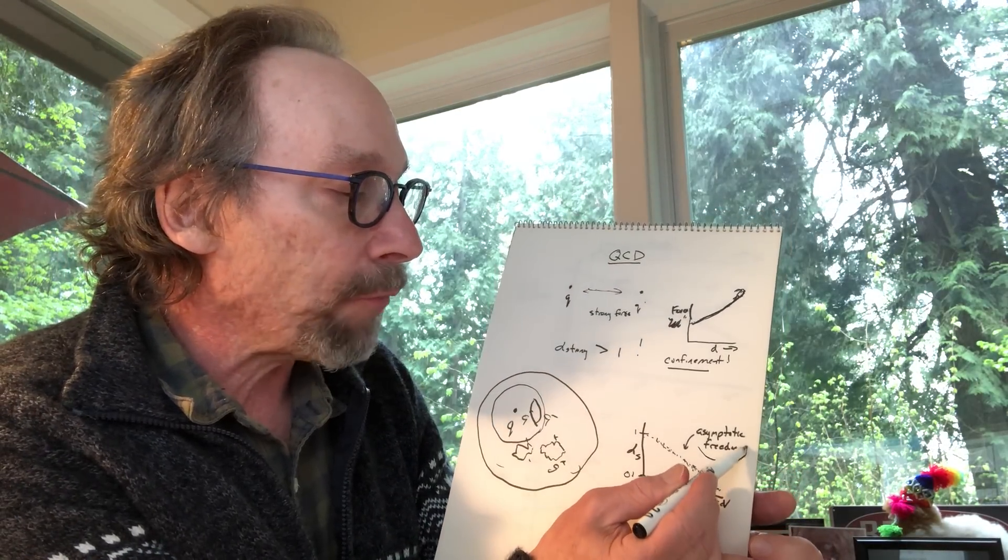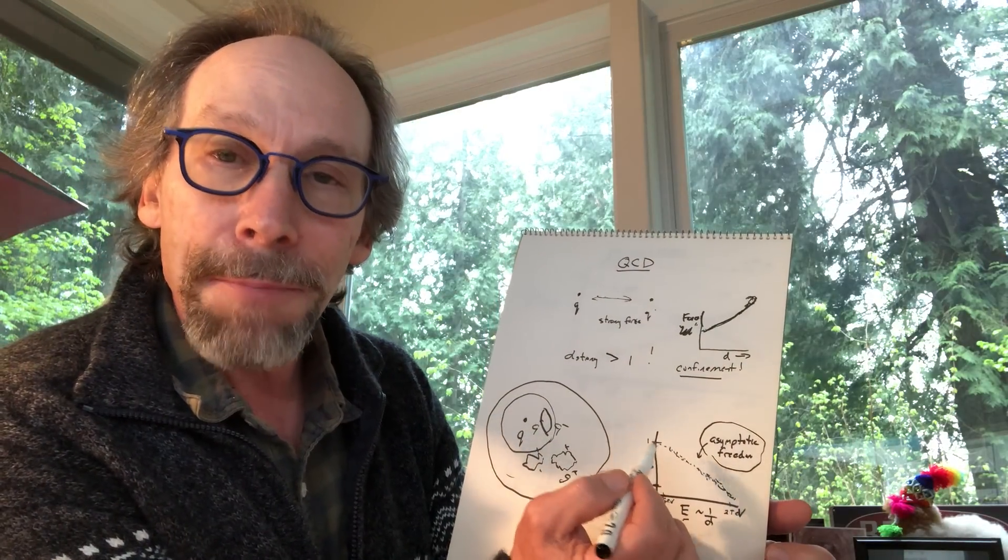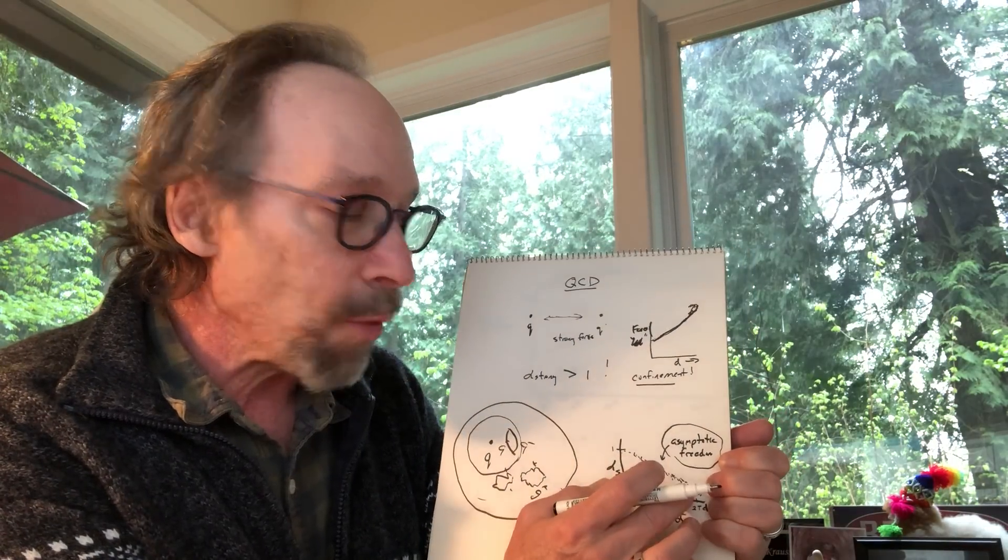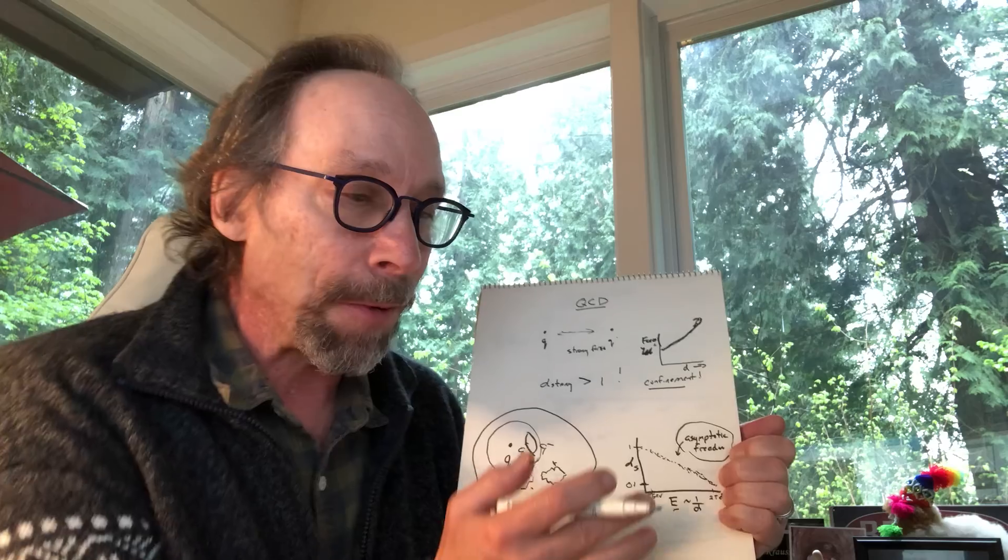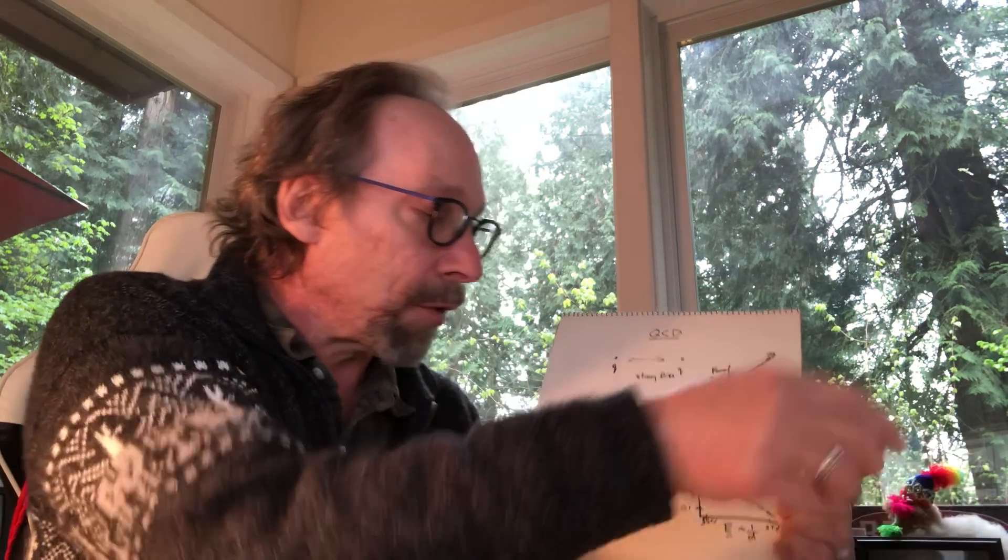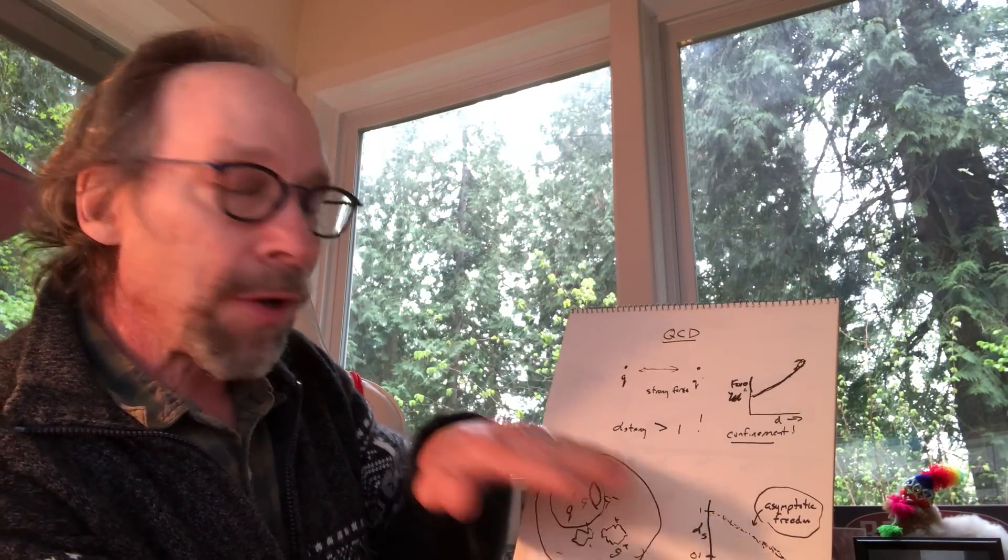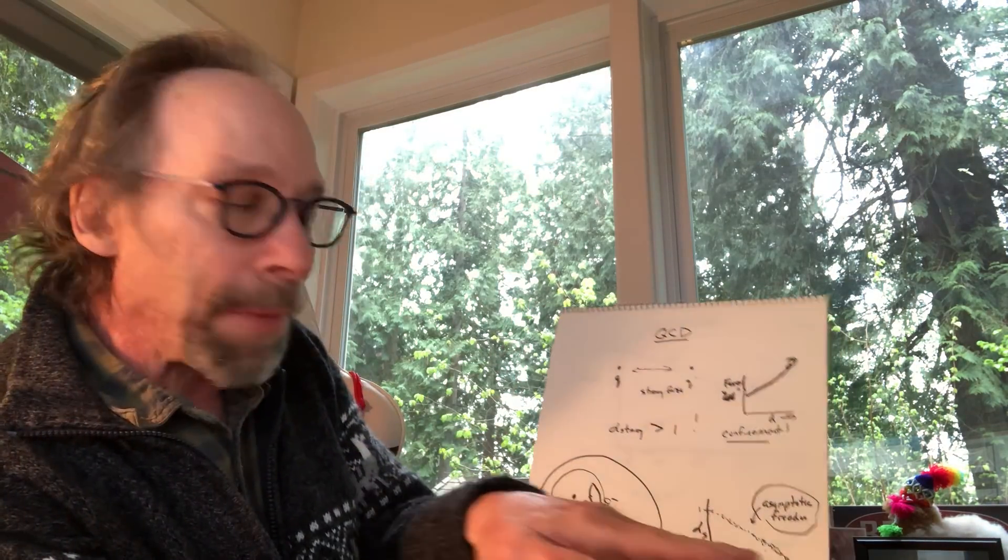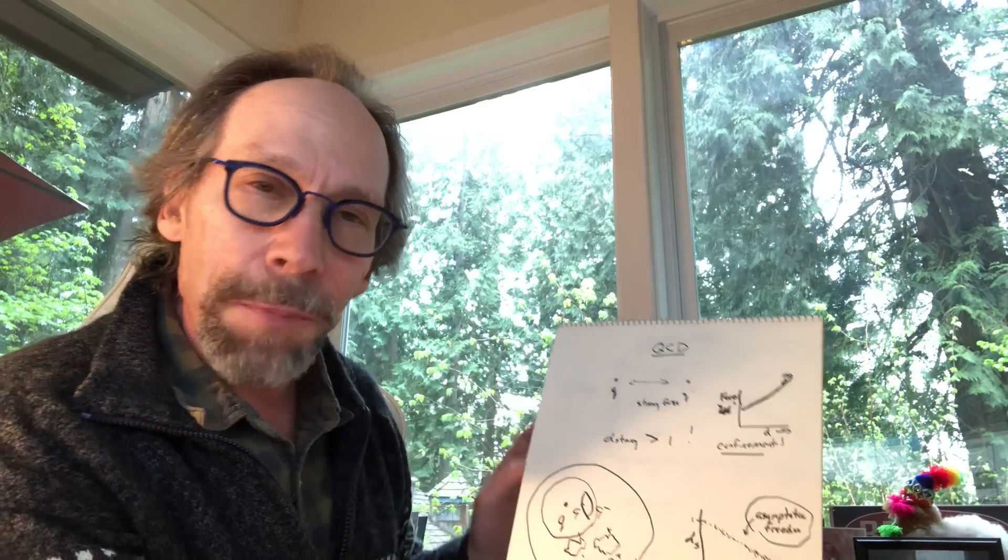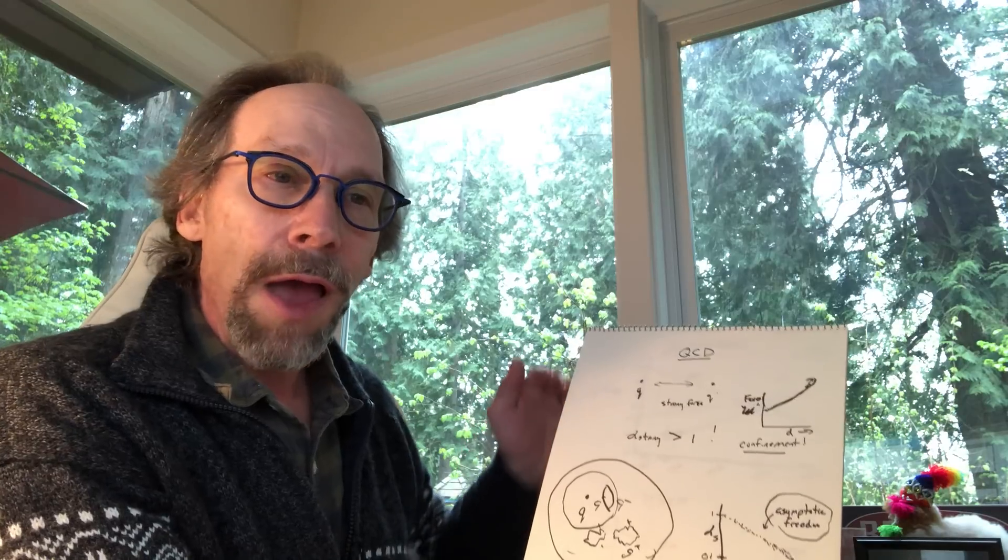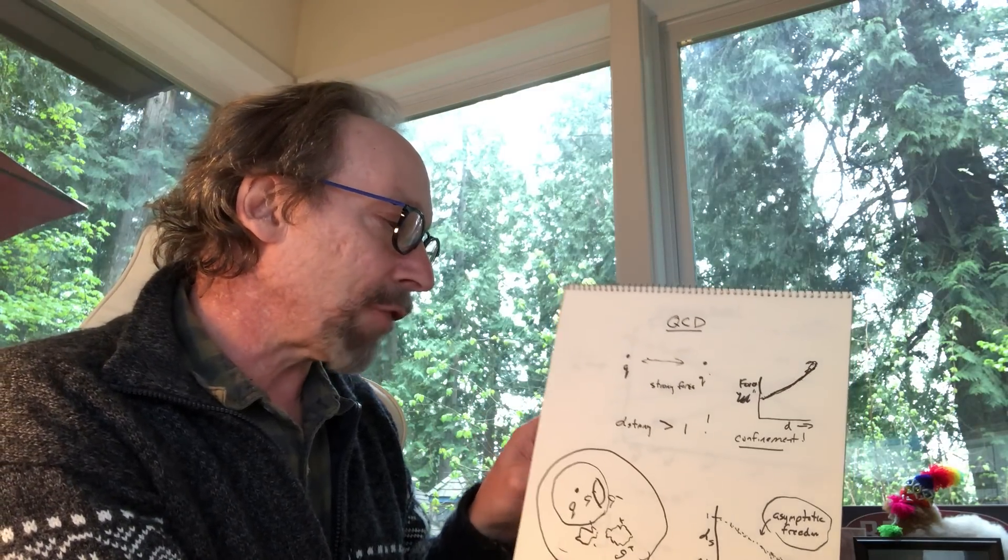This phenomena of the strong force getting weaker was called asymptotic freedom. I mentioned it earlier when I talked about that Nobel Prize. The fact that the strong force gets weaker with high energies was what had surprised people in the 1970s, and the prediction of that in the 1970s won the Nobel Prize in 2004. So this is the phenomena of the strong force getting weaker, asymptotic freedom. The electromagnetic force gets stronger as you go up in energy, and therefore that leads you to suspect if electromagnetism, which is much weaker than the strong force, gets stronger, and the strong force gets weaker, maybe the forces of nature can get unified.